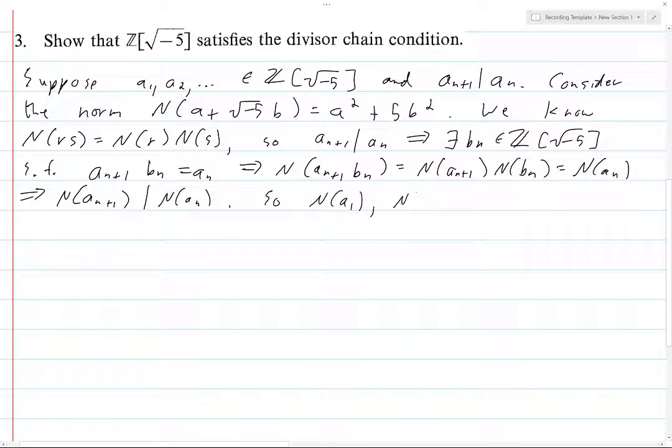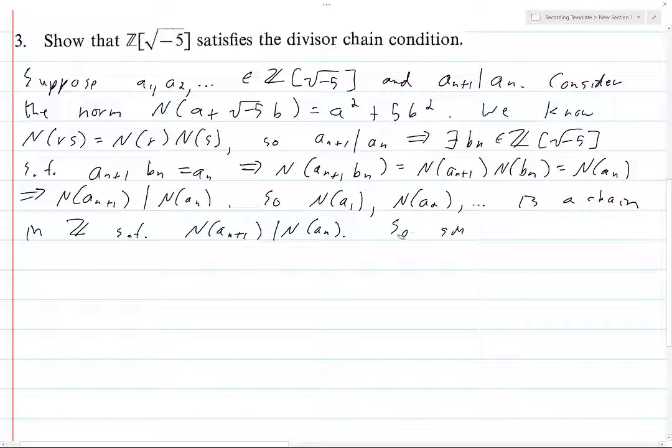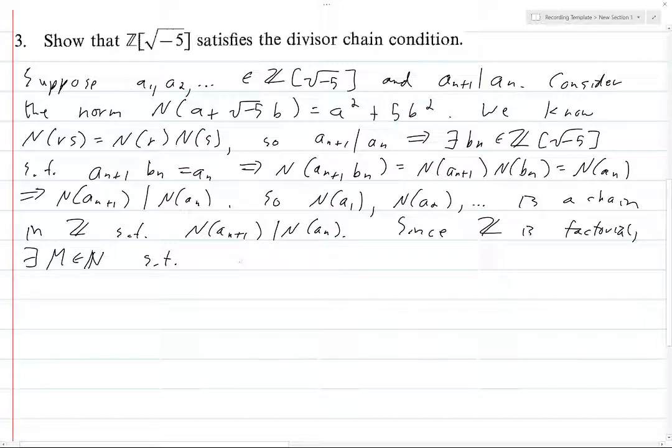So N(a_1), N(a_2), ... is a chain in Z such that N(a_{n+1}) divides N(a_n). Since Z is factorial, there exists an M natural number such that for all n, N(a_M) is equivalent to N(a_{M+1}) which is equivalent to all the way up to infinity.